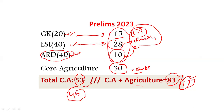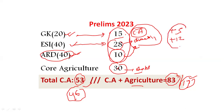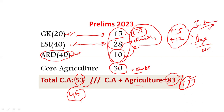Where did those 17 questions come from? In GK, 15 questions were from current affairs and the rest 5 from static. In ESI, the remaining 12 questions were from static. Out of these 17 questions, most were either from flagship schemes — the very major government schemes talked about internationally, like NREGA, the largest employment guarantee program in the world, and NRLM, the largest poverty alleviation program — or they were indirectly from current affairs.